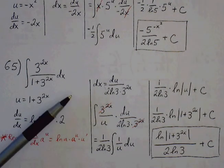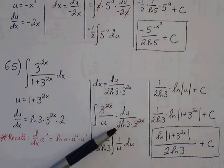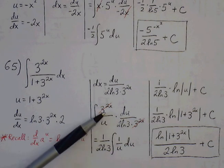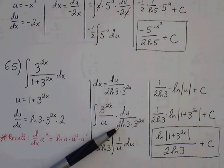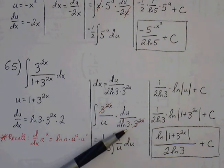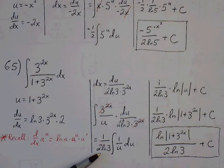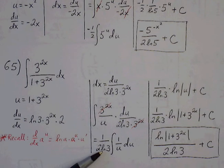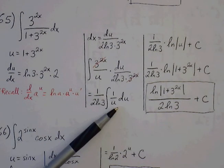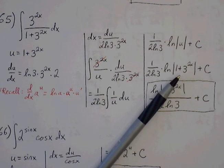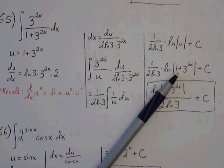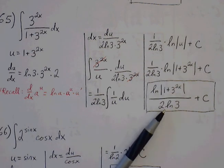We make our substitutions. The denominator gets replaced with u. dx gets replaced with du over 2 ln of 3 times 3 to the 2x. The 3 to the 2x cancels out nicely. Remember, natural log of a is a constant coefficient, so this won't prevent the problem from continuing — we just pull 1 over 2 natural log of 3 out in front. The integral of 1 over u is simply natural log of the absolute value of u. Replace u back with 1 plus 3 to the 2x, and we can write the result as one fraction with 2 natural log of 3 in the denominator, plus C.